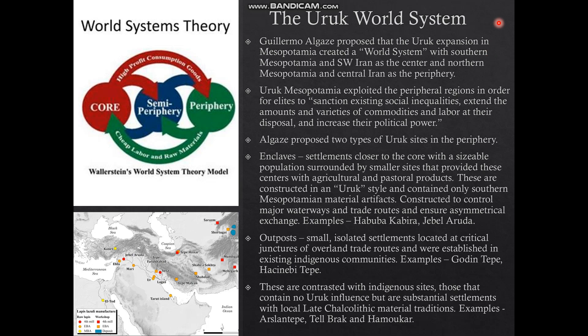To maintain the system, Algaze proposed two types of Uruk settlements in the periphery. First, he proposed enclaves, which were essentially colonies — settlements closer to the core with sizable populations built in an Uruk Mesopotamian style, with southern-style architecture, southern Mesopotamian pottery, goods, and social organizational strategies. These were constructed at locations of major waterways and trade routes to ensure first control of goods and resources flowing through these regions for the Uruk state. Examples include Jebel Arruda and Habuba Kabira.